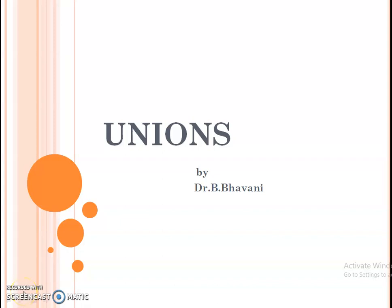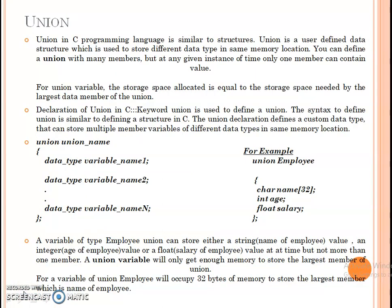Hello everyone. I would like to discuss the topic of unions in C language. A union is also a concept in C language, similar to a structure. It is a user-defined data type used to store different data types in the same memory location. You can define a union with many members, but at any given instance of time, only one member can contain a value.